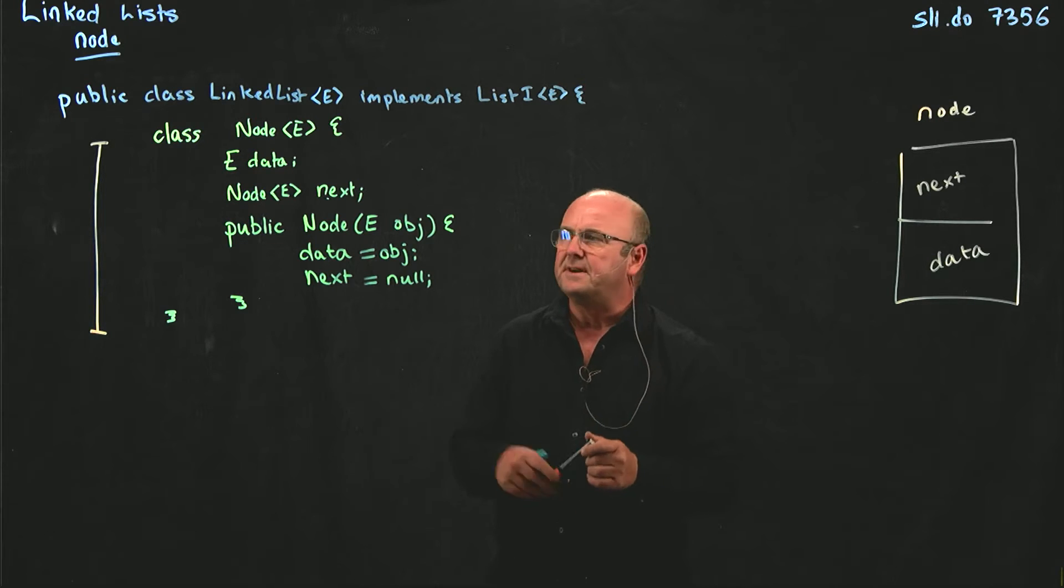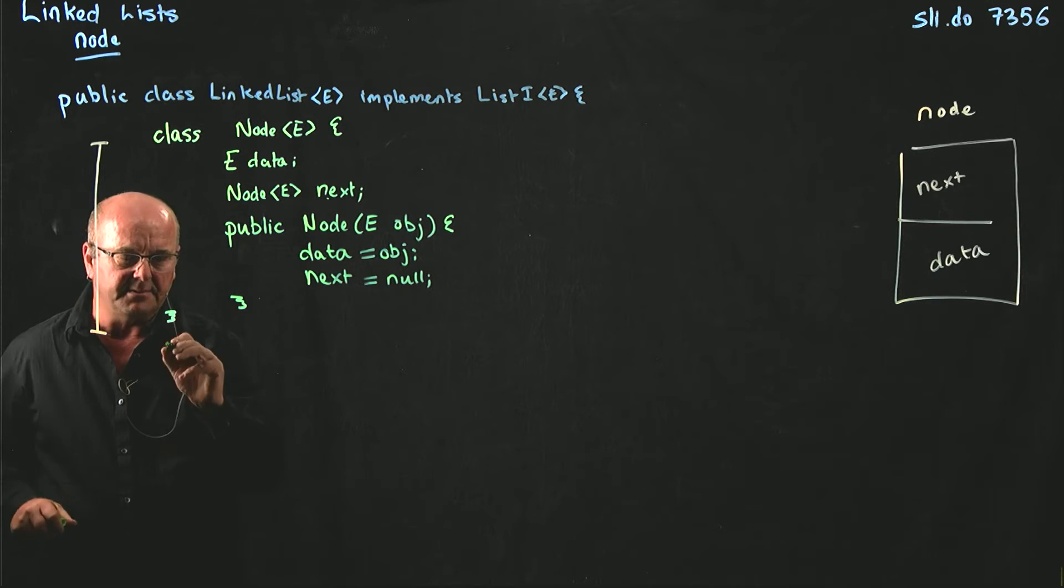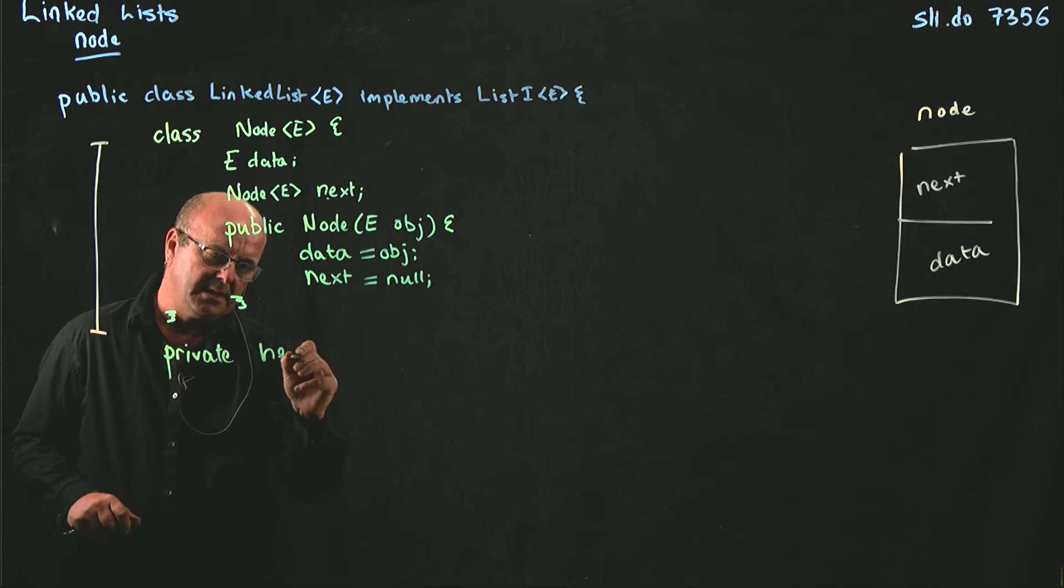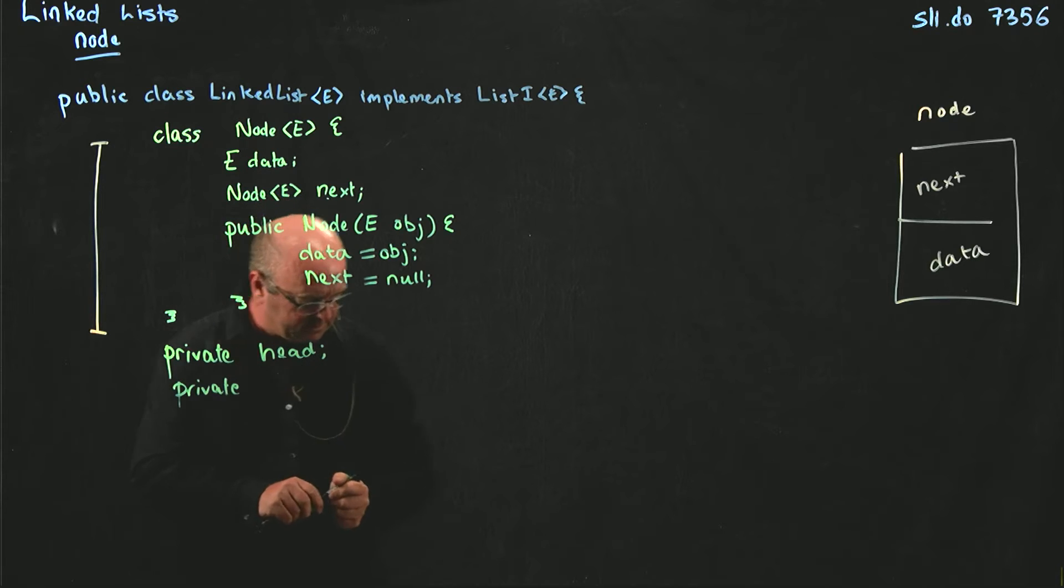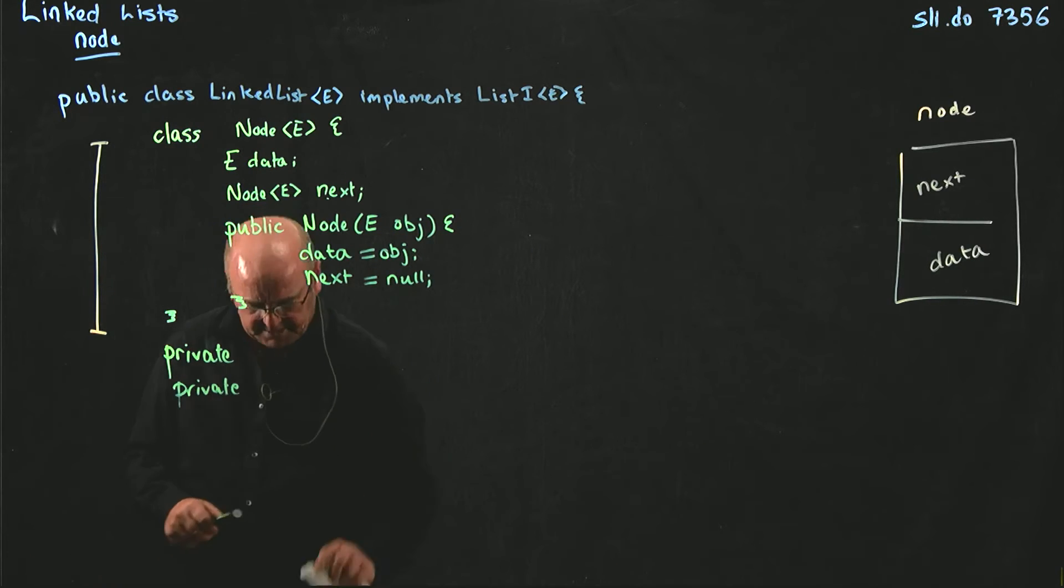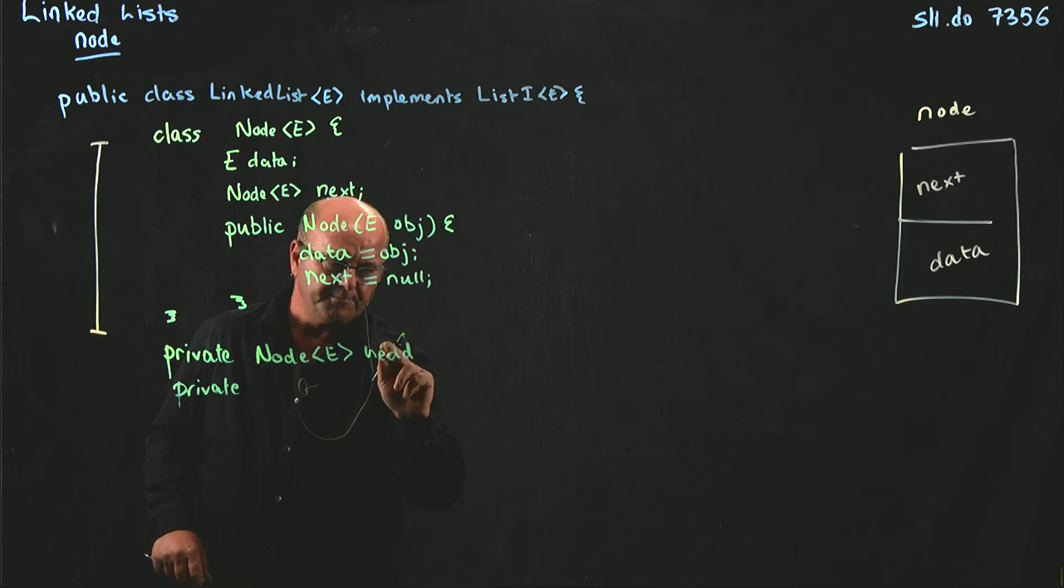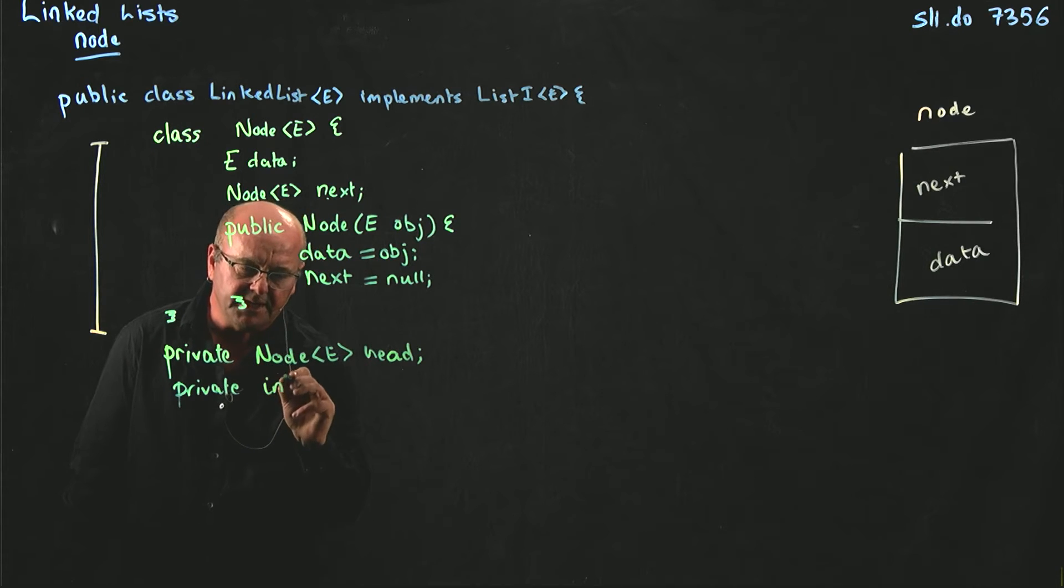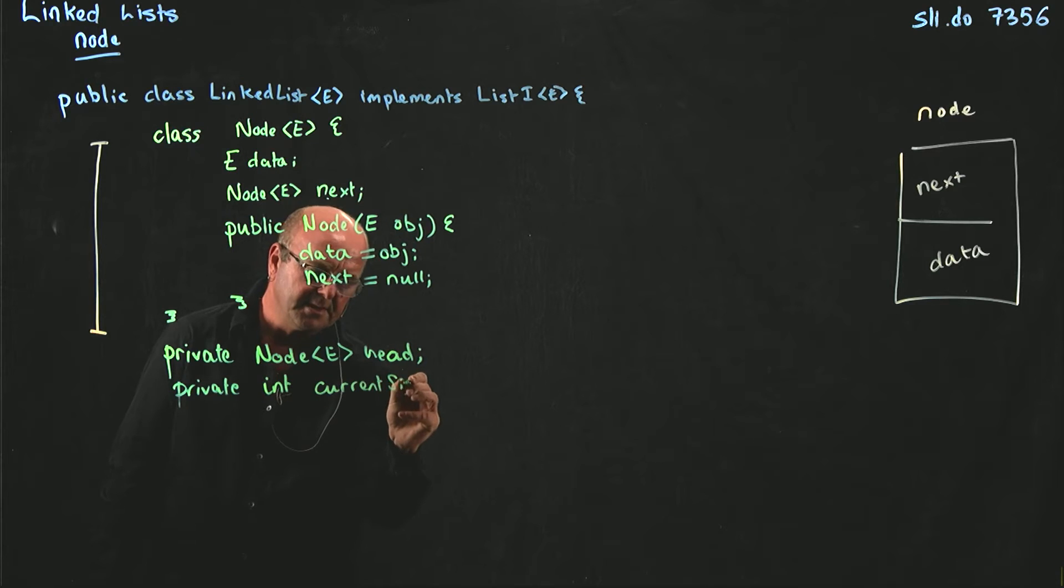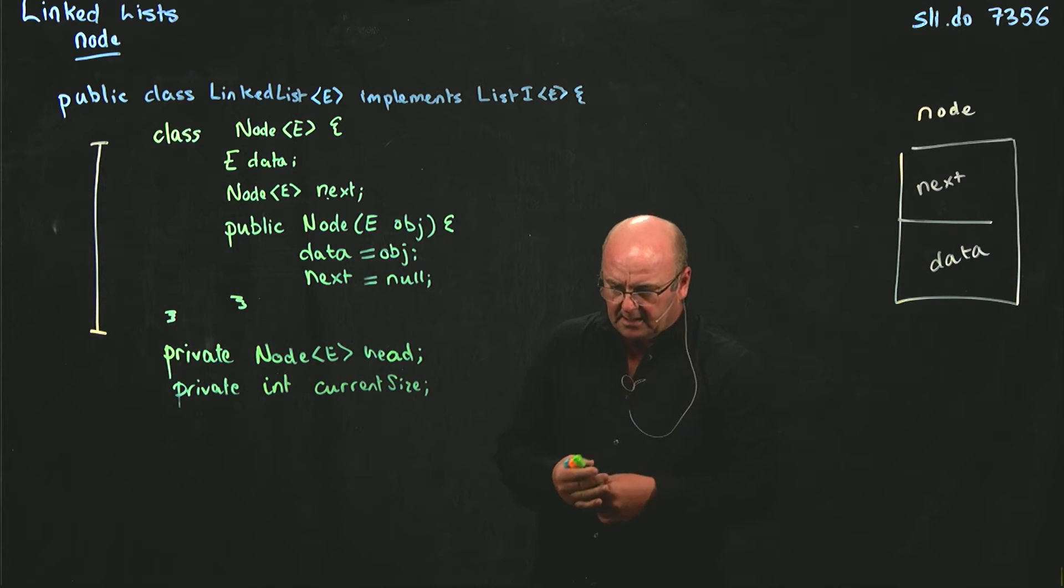So now we need a couple more variables. We need to remember where the head is. So let's have a private variable head, and we're going to have another variable which is of type int, which we'll call currentSize. And I'm going to come back to this variable in just a few minutes and explain why we keep that.